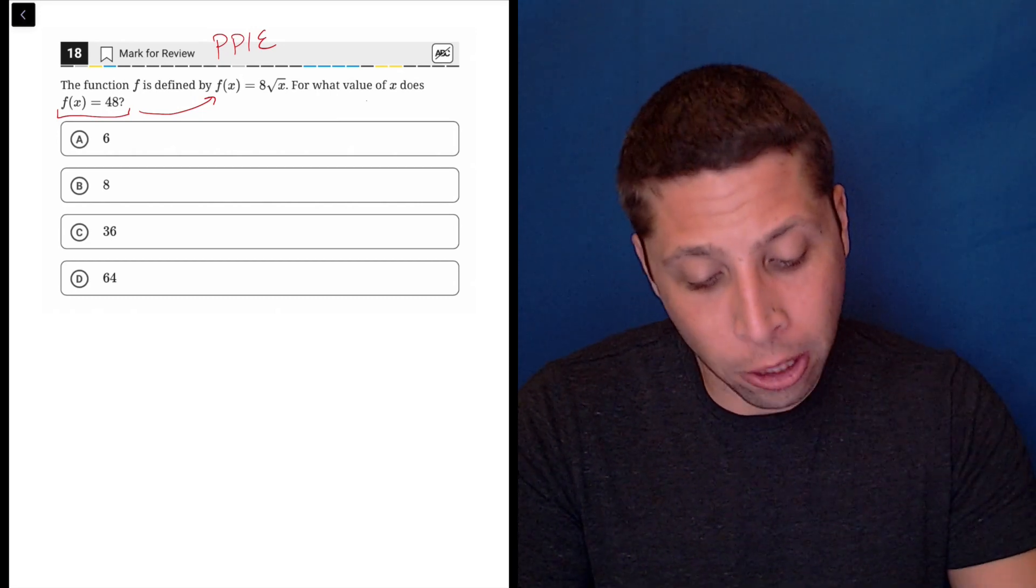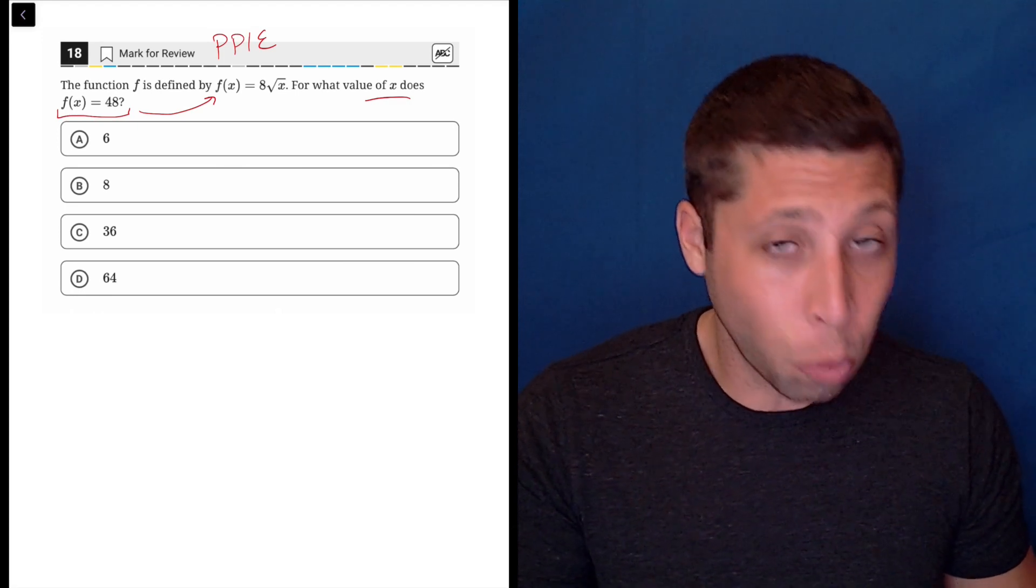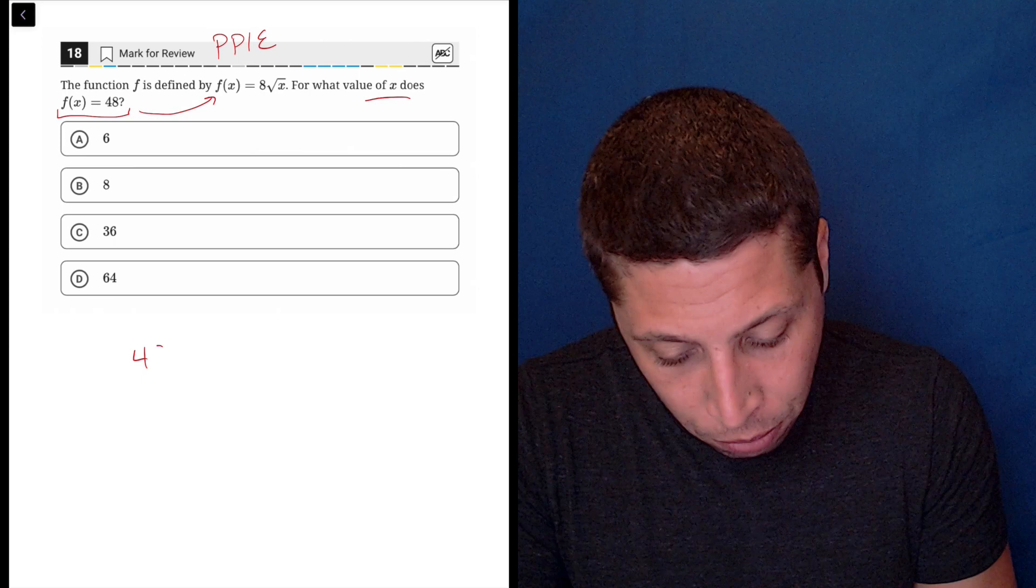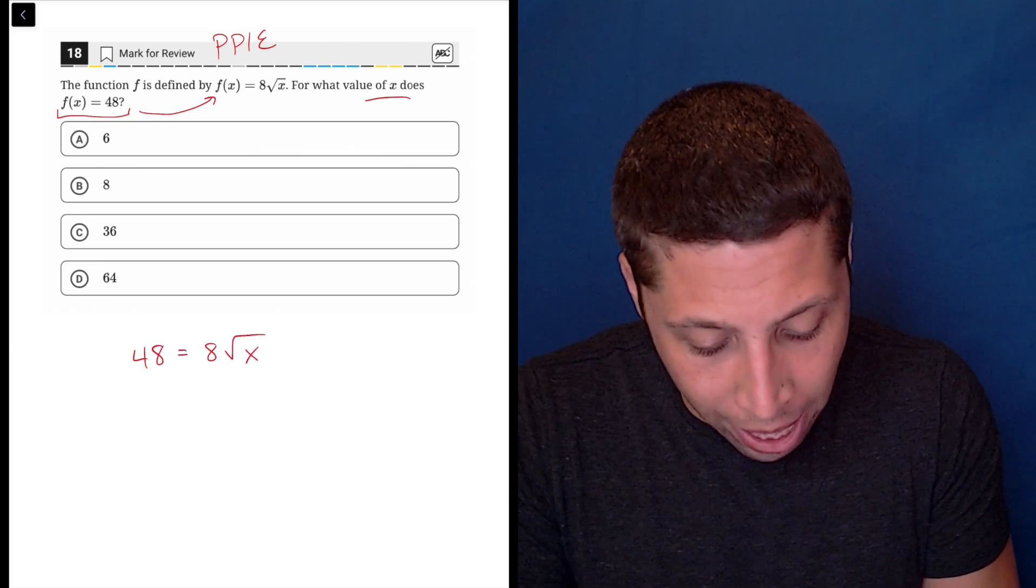So the other clue is they're asking for x. So we're going to need to structure this thing so that x comes out of this. So I would do 48 is equal to 8 square root x.